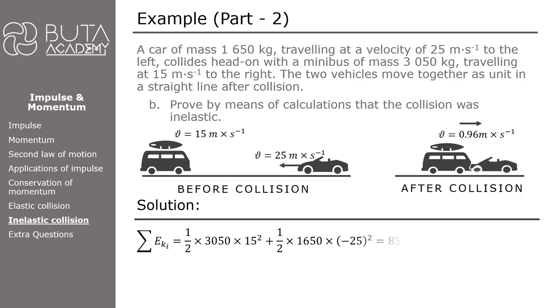Before the collision, the kinetic energy of the minibus is 1/2 times 3050 times the square of 15. The kinetic energy of the car is 1/2 times 1650 times the square of 25. These two added together equal 858,750 joules.